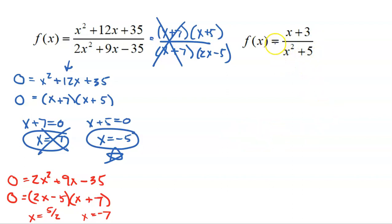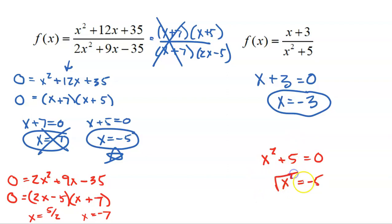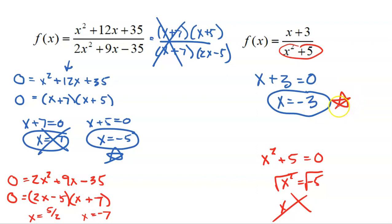Next example: F of X with numerator X plus three. Setting it equal to zero gives X equals negative three. Now I need to check the denominator. Trying to solve X² + 5 = 0 would require a square root of a negative number — that's impossible. So the denominator has no values that make it zero; its domain is negative infinity to infinity. Plugging in negative three: negative three squared is nine, nine plus five is not zero. So negative three only makes the numerator zero — it is a solution.